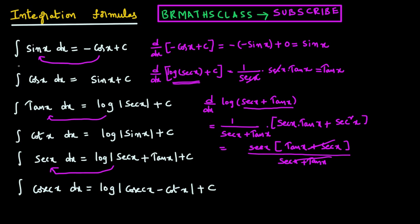Now observe: we have learned integrals of all six trigonometric functions — integral of sin x, integral of cos x, integral of tan x, integral of cot x, integral of secant x, integral of cosecant x. We take these as formulas. With these six formulas, another four easy formulas are there. Now we will see what those four easy formulas are.